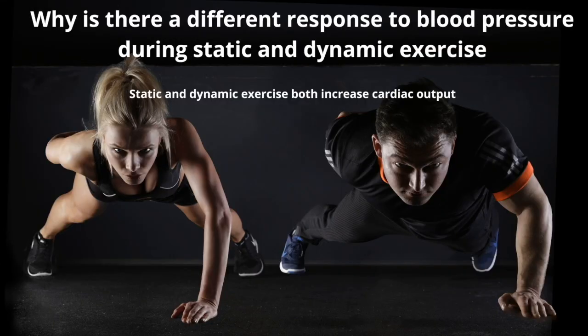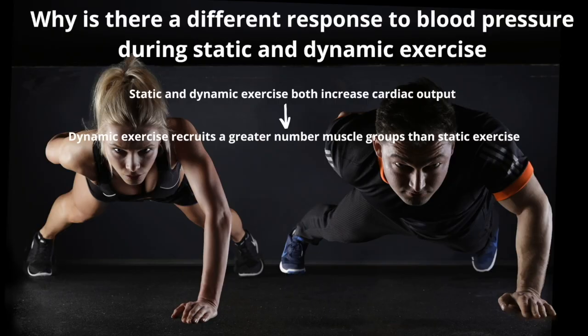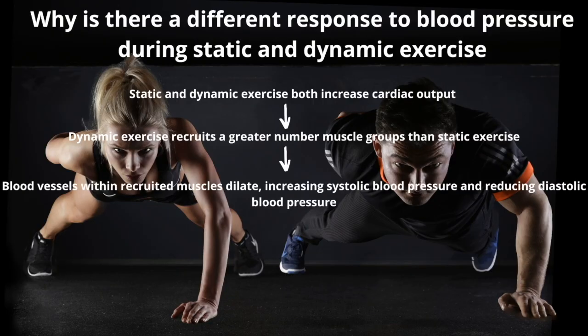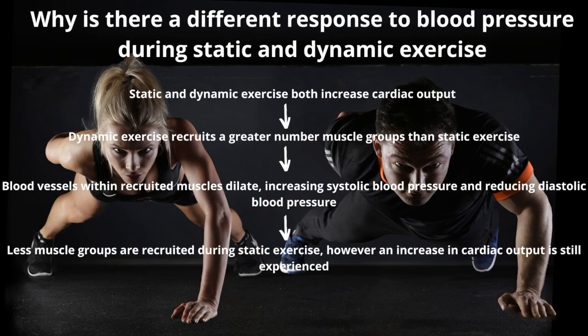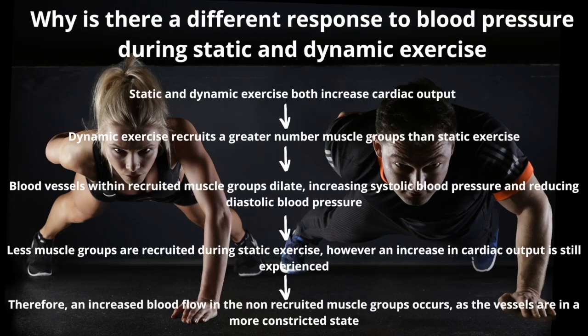The reason this happens is specific. Both static and dynamic exercise increase cardiac output. Dynamic exercise recruits a greater number of muscle groups, so more muscles experience vasodilation, meaning more dilation overall. When relaxing between contractions, that dilation causes a reduction in diastolic blood pressure. With static exercise, fewer muscle groups are recruited, but cardiac output still increases. The increased blood flow through less dilated vessels means more pressure on those vessels, creating an increase in both systolic and diastolic blood pressure.